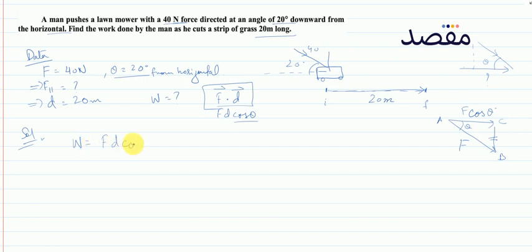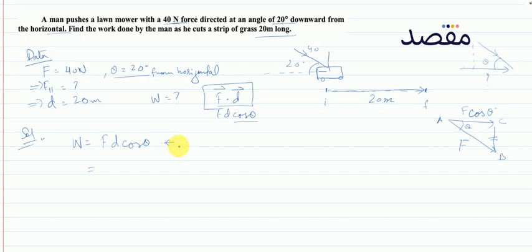मैंने एक triangle बनाया है समझाने के लिए — just to make sure कि हम कोई भी value blindly put न करें। Formulas को cross check करना जरूरी है, जो usually students नहीं करते।